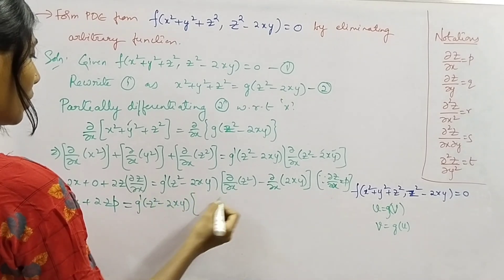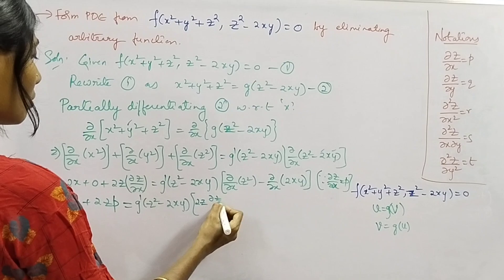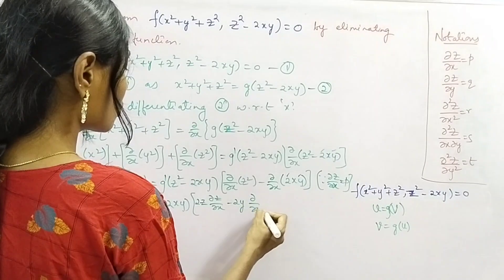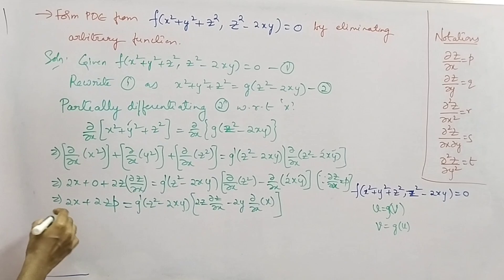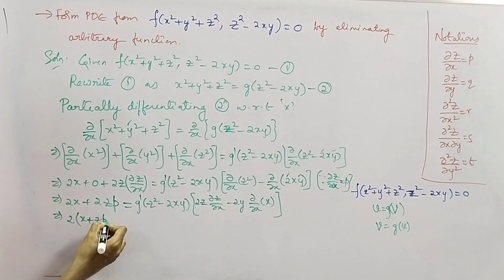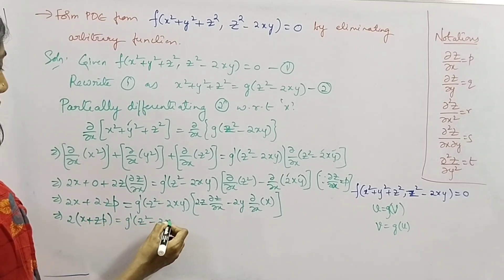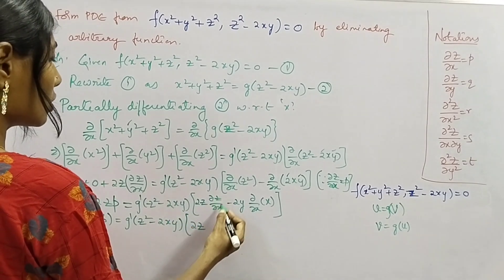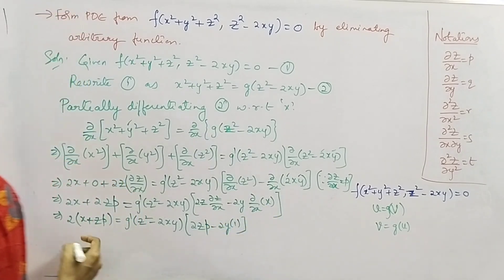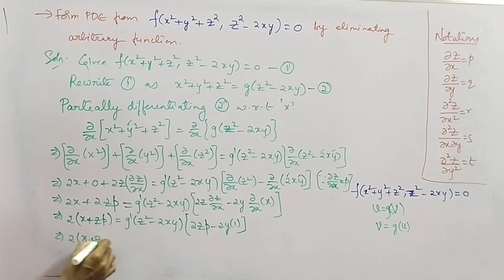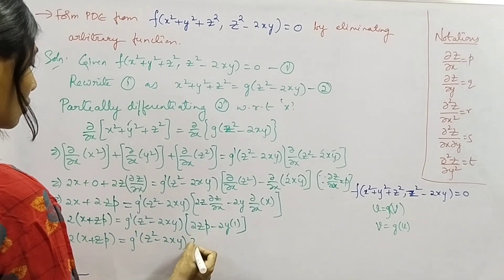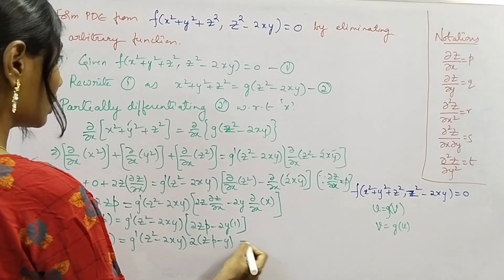The right-hand side becomes g'(z² − 2xy) times (2z · ∂z/∂x − 2y · ∂x/∂x), which is g'(z² − 2xy) times (2zp − 2y). Taking 2 common from the left-hand side gives 2(x + zp), and taking 2 common from the right-hand side gives 2(zp − y). So equation 3 is: (x + zp) = g'(z² − 2xy) · (zp − y).